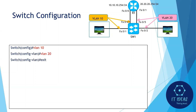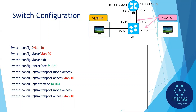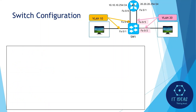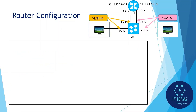First we will configure it in the switch CLI. Go to global configuration mode, create VLAN 10 and VLAN 20, then assign these VLANs to the switch interfaces. For interface F0/1, assign it to VLAN 10 using the 'switchport mode access' command to change the port to access mode, then 'switchport access vlan 10' to bind this interface to VLAN 10. We will do the same for interface F0/4, and similarly assign VLAN 20 to interfaces F0/2 and F0/5.